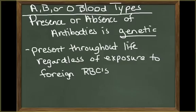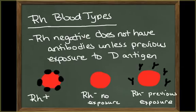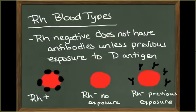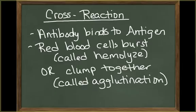The presence of these antibodies is genetically determined, and they are present throughout life, regardless of whether the individual has ever been exposed to foreign red blood cells. In contrast, the plasma of an RH-negative individual does not contain anti-RH antibodies. These antibodies are present only if the individual has been exposed to the RH antigen. Such exposure can occur accidentally during a transfusion, or during a pregnancy involving an RH-negative mother and an RH-positive fetus. When an antibody meets its specific surface antigen, the red blood cells agglutinate and may hemolyze or burst. This reaction is called a cross-reaction.